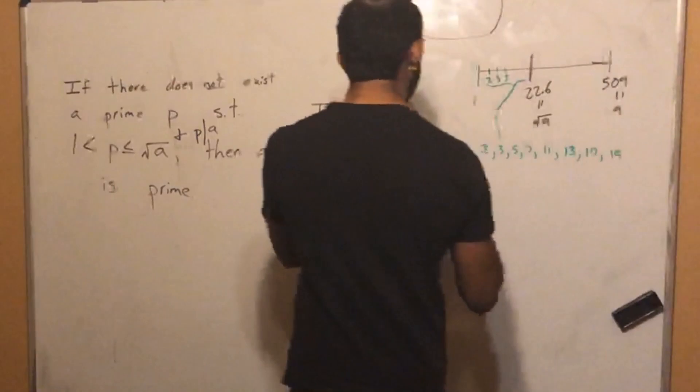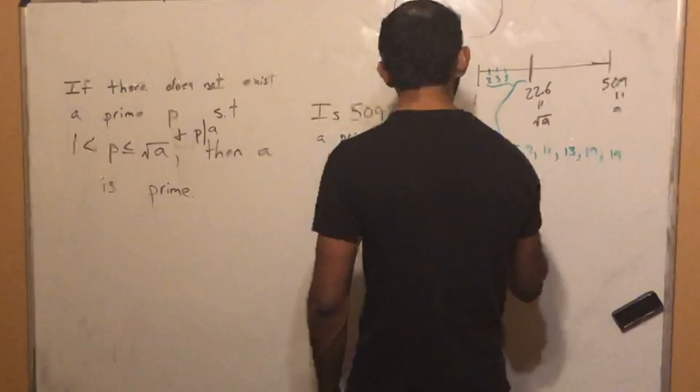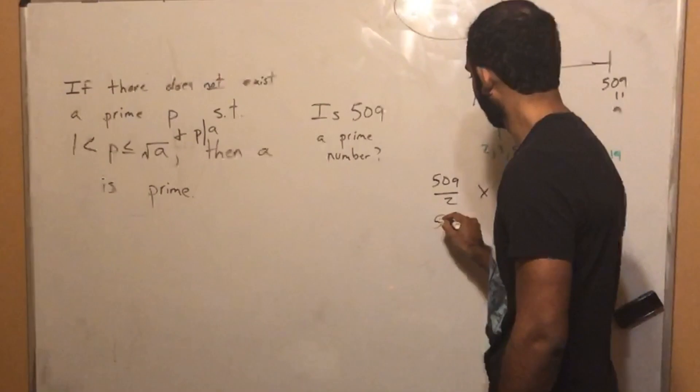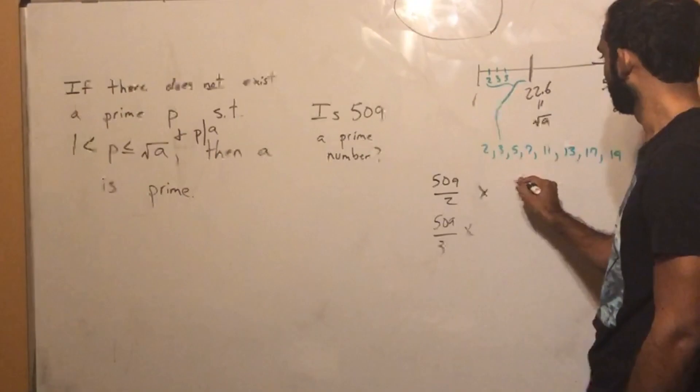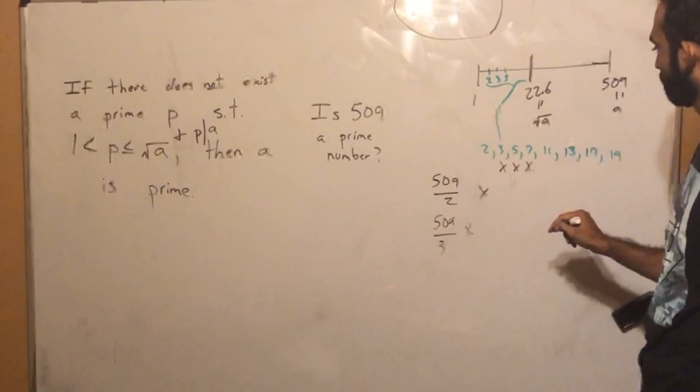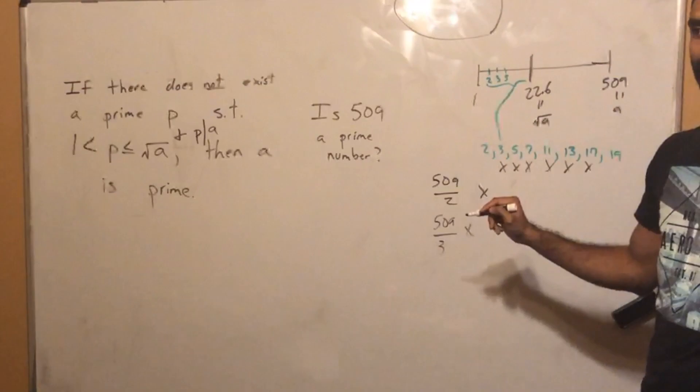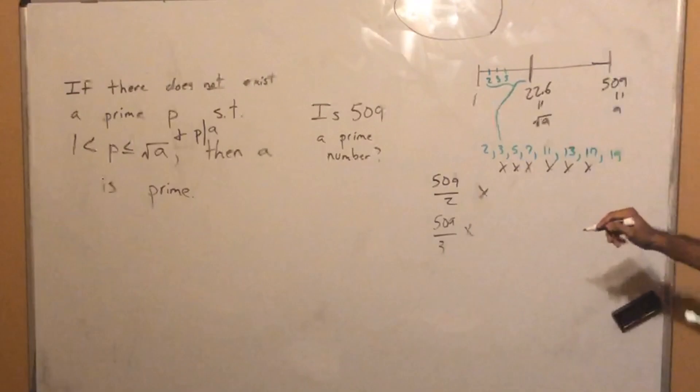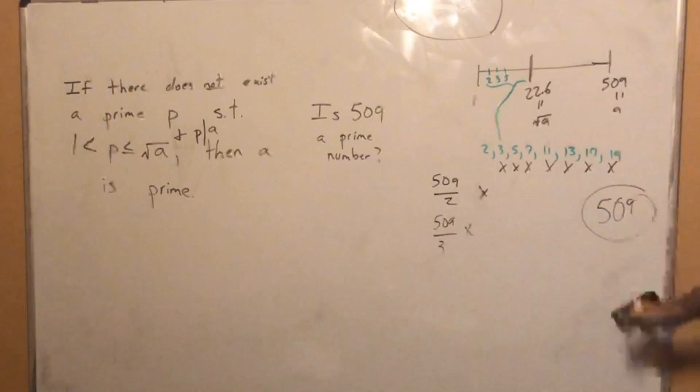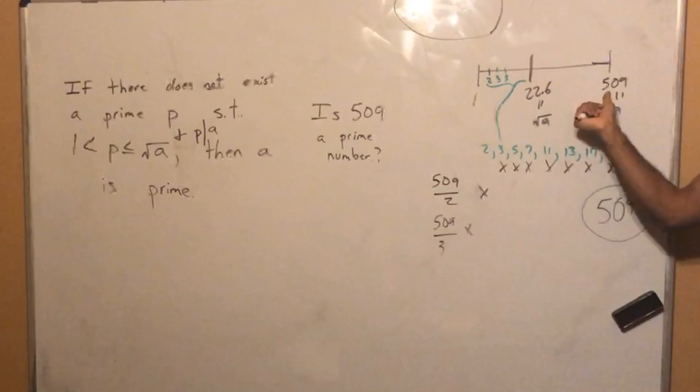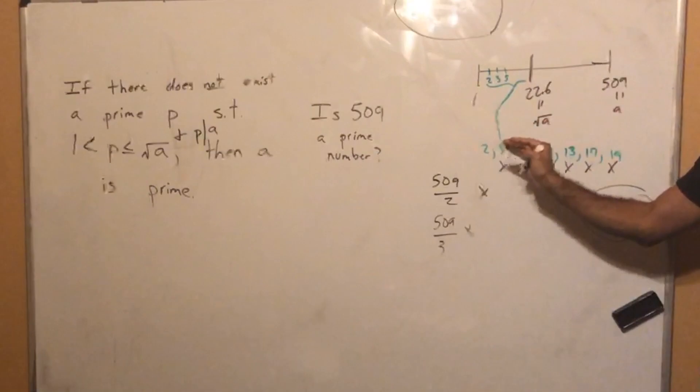I should amend this statement. If there does not exist a prime P such that this is true, and P divides A, then A has to be prime. All you've got to do is take 509 divided by all these numbers and see if it's a whole number. 509 over 2? No. 509 divided by 3? No. What about 7? No. Does 11 work? No. 13? No. 17? No. 19? No. So 509 is prime.